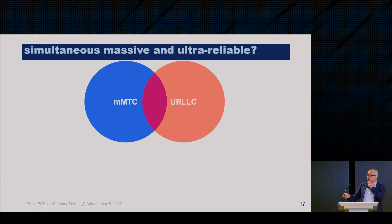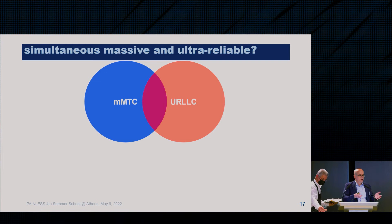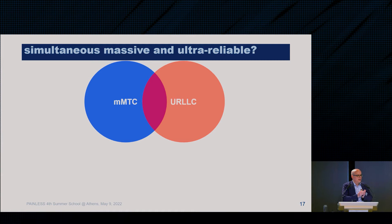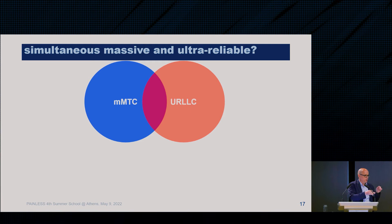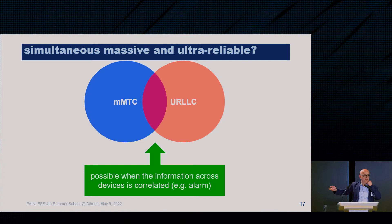There is MMTC — Massive Machine-Type Communication — and there is URLLC, ultra-reliable low-latency service in 5G. Sometimes we get eager to do combinatorial research: Massive Ultra-reliable, terahertz-RIS, and so on. But what if we combine Massive and Ultra-reliable low-latency communication? That is almost an oxymoron: if you could do URLLC at massive scale it should be easy with just two or three devices, and we know it is not. It is possible to have Massive and Ultra-reliable communication when the information is correlated.